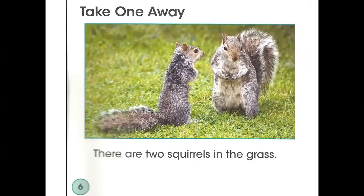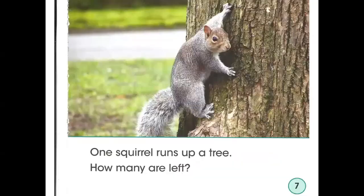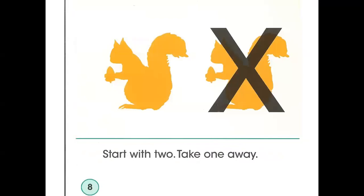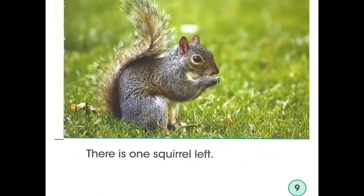There are two squirrels in the grass. Can you count them? One, two. One squirrel runs up a tree. How many are left? There were two, and one runs away. Start with two squirrels, take one away. There is one squirrel left.